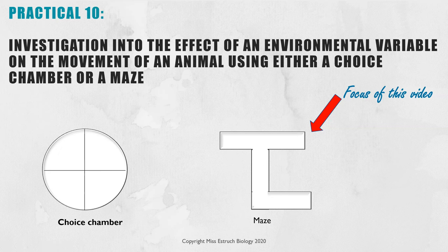Required practical 10 for AQA A-Level is the investigation into the effect of an environmental variable on the movement of an animal using either a choice chamber or a maze. I've already done a video on the choice chamber, which I'll link up here. This video is just focusing on the method using a maze.